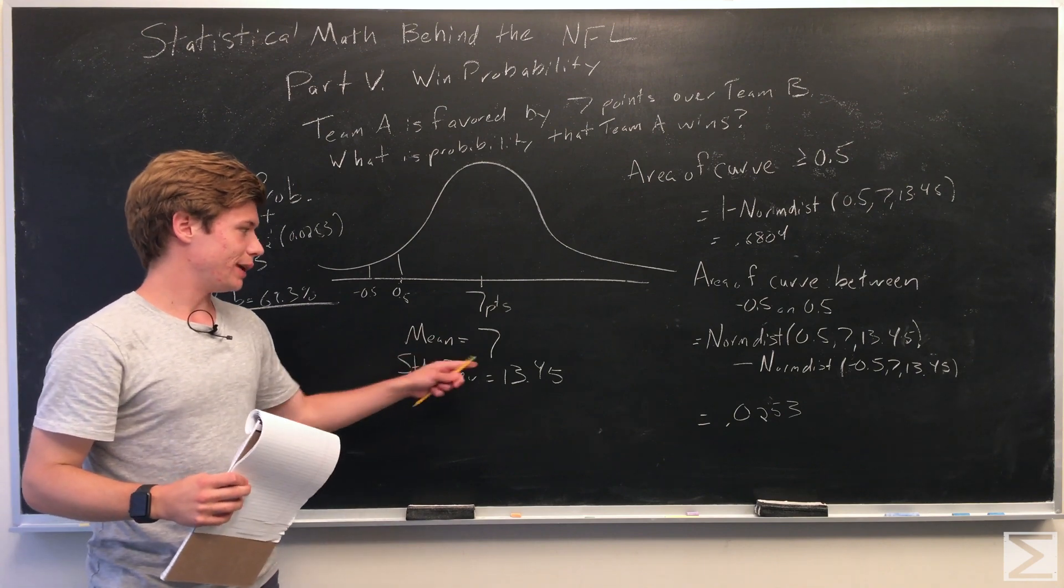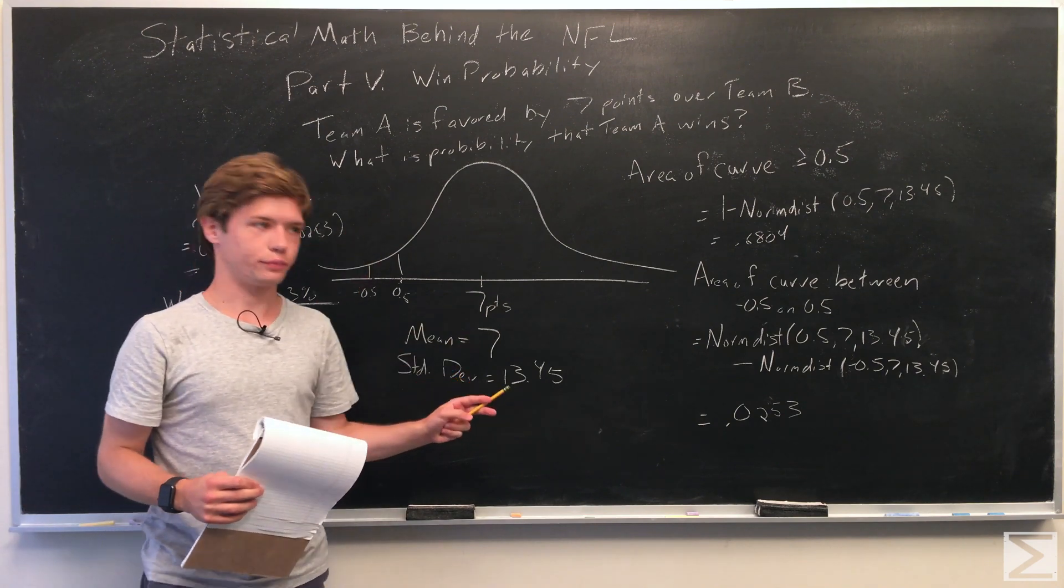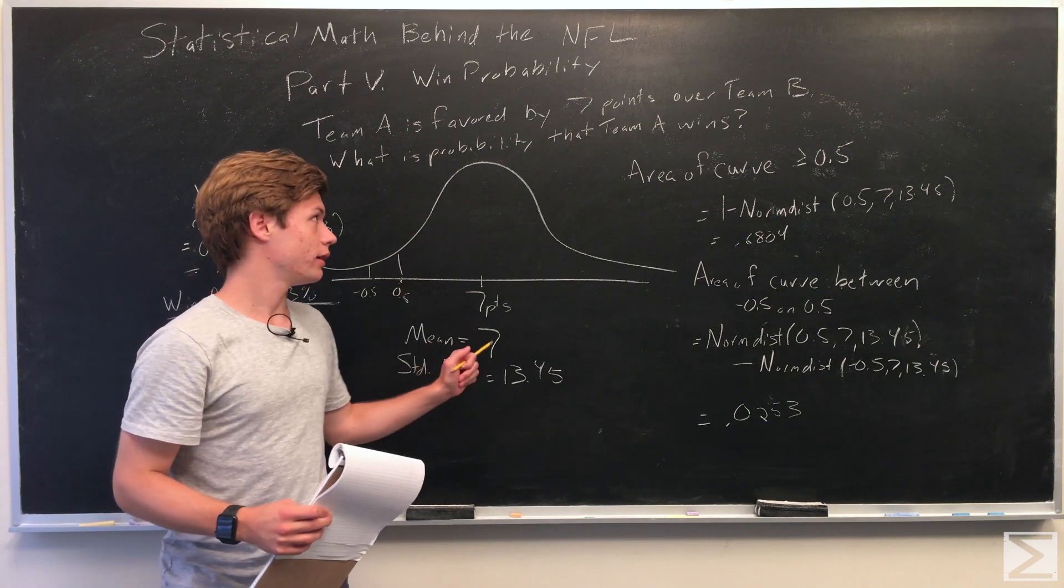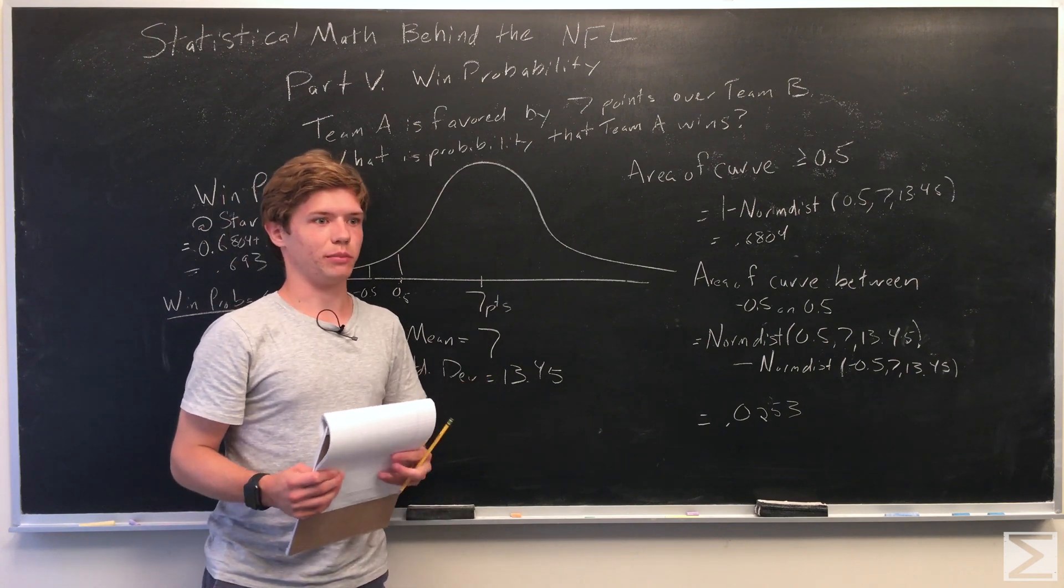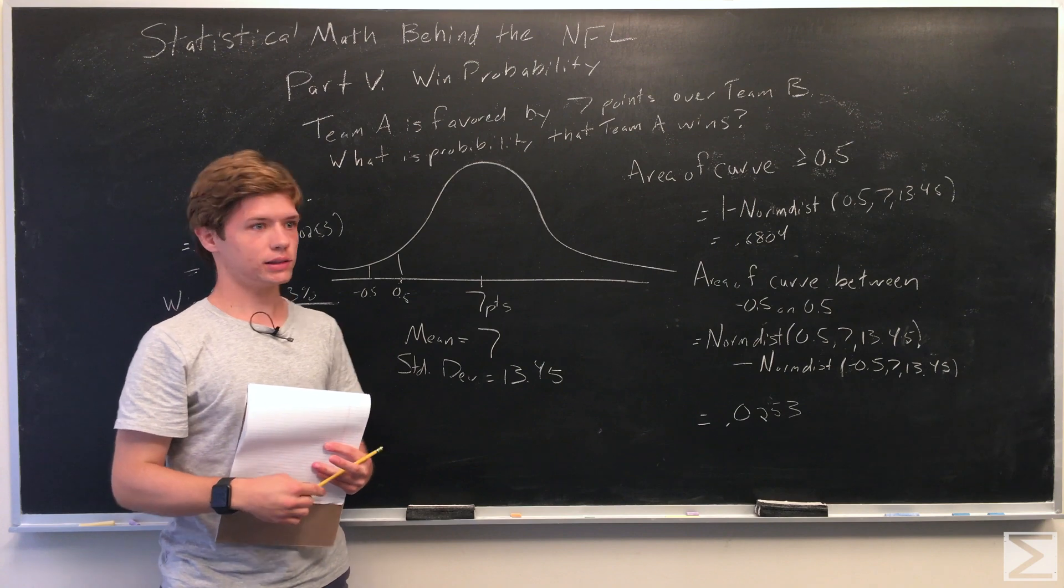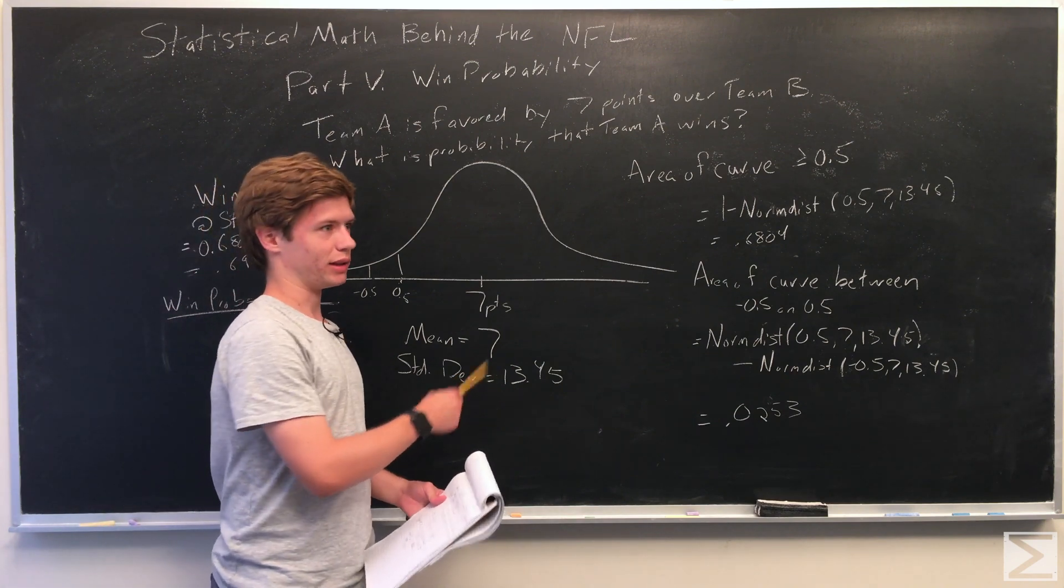So you still keep in mind that Team A was favored by seven points, but you have to add or subtract whatever Team A's total is to this number. So let's say, for example, Team A is winning by seven points. As the mean, we would use 14, which is seven plus seven.